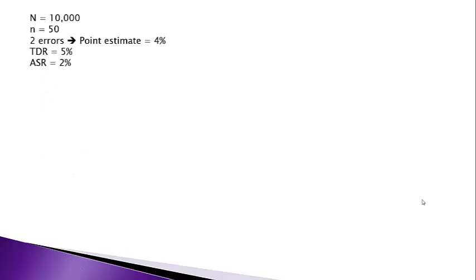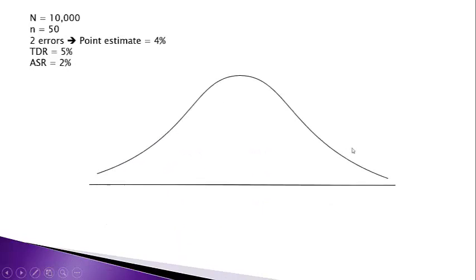So to summarize our parameters: sample size is 50 out of 10,000, we found two errors giving a point estimate of 4%, we can tolerate up to 5% error, and our allowance for sampling risk is 2%. We're going to use a bell curve to illustrate how attribute sampling results are evaluated. Most populations don't follow a bell curve exactly, but it makes the example easy to follow, and most viewers have already had statistics.